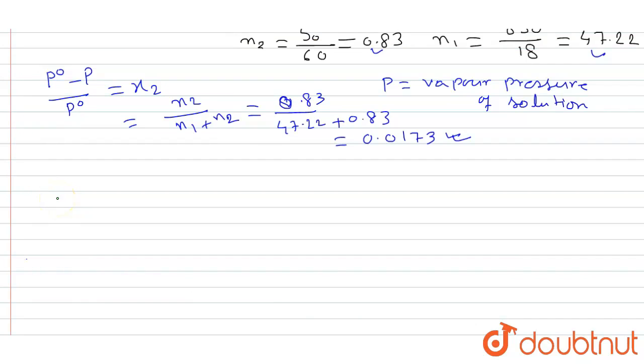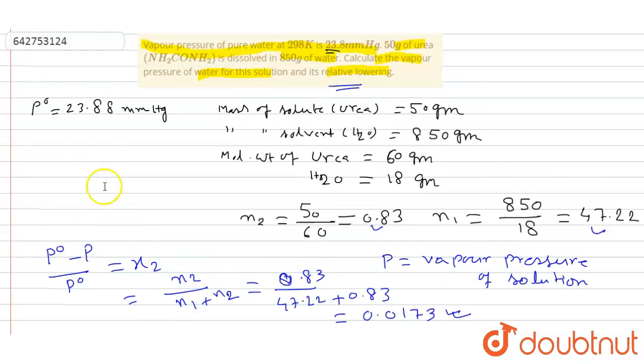Now we get P⁰ minus P by P⁰ equal to x₂ that is 0.0173, and in the question given that P⁰ equal to 23.88 mm of Hg.